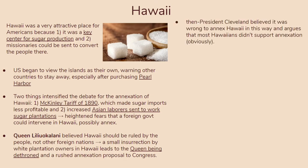Queen Liliuokalani believed that Hawaii should be ruled by its own people, not a foreign nation. President Cleveland believed it was wrong to annex Hawaii this way and argued that most Hawaiians wouldn't support annexation. He ultimately decided to block the annexation plan, though Hawaii will eventually be taken in 1898.